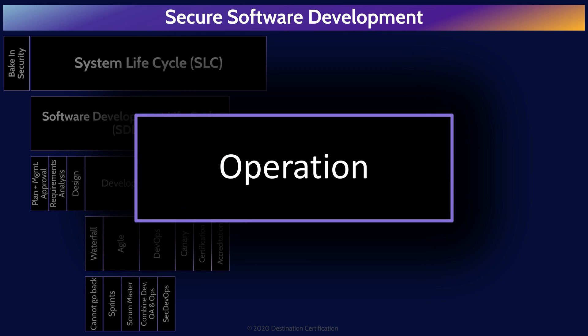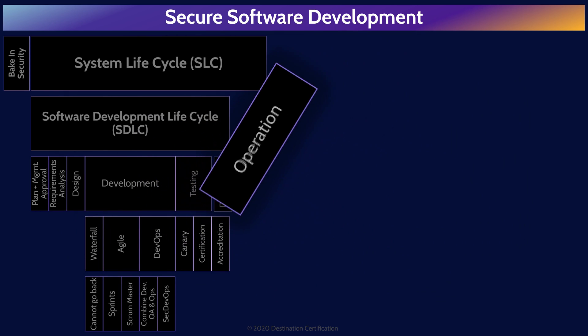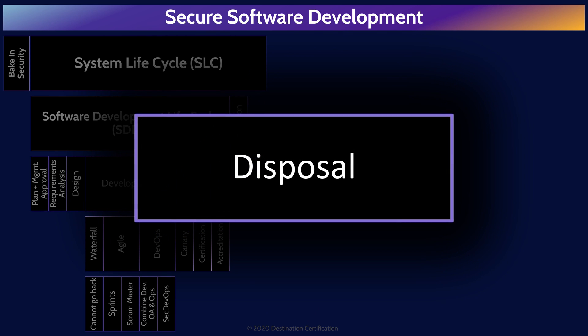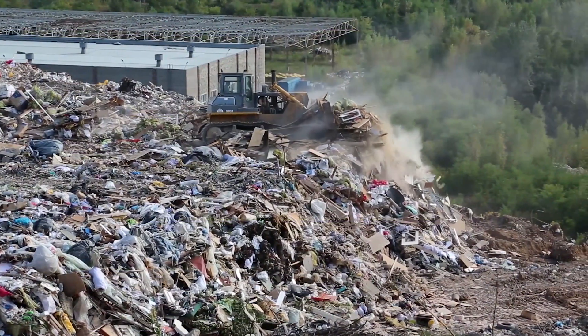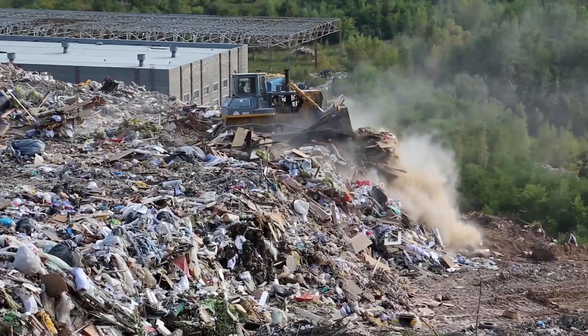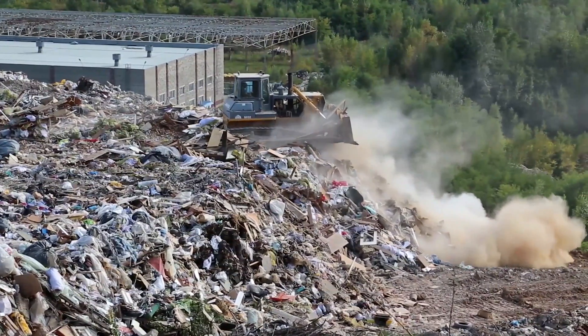Operations is where the system is being actively used for business purposes. The disposal phase is extremely important and often overlooked. When a system is retired and replaced, there need to be controls in place to ensure data, logic, processes, etc. are migrated to the new system with integrity. Data in the old system is retained as necessary, and if the old system and data are to be deleted, the data may need to be defensively destroyed and not just left on a hard drive that is then sold on eBay.